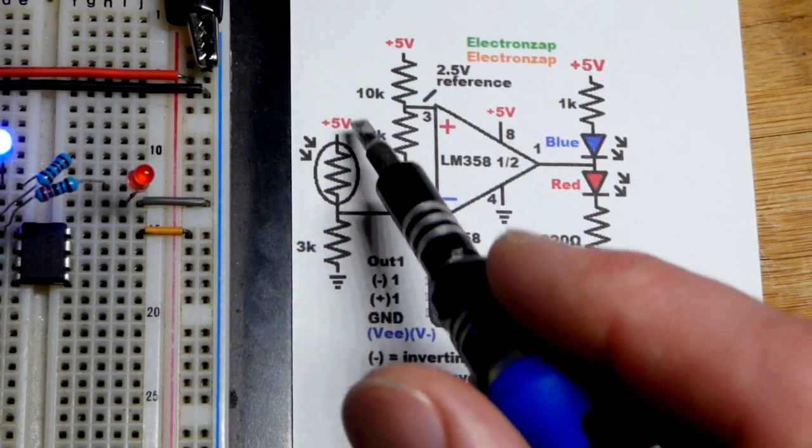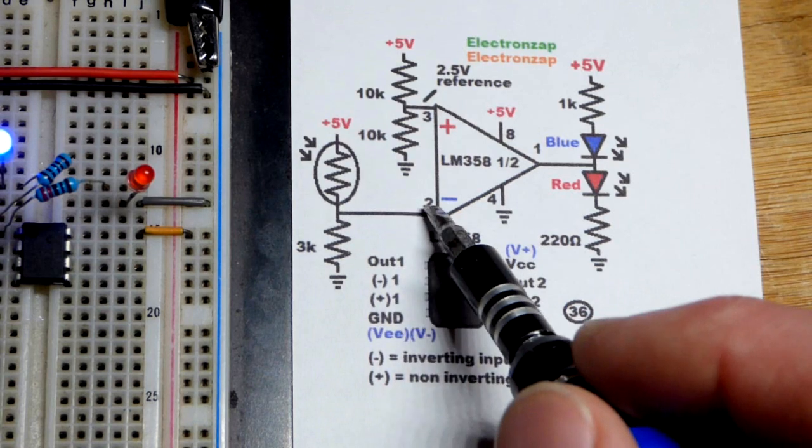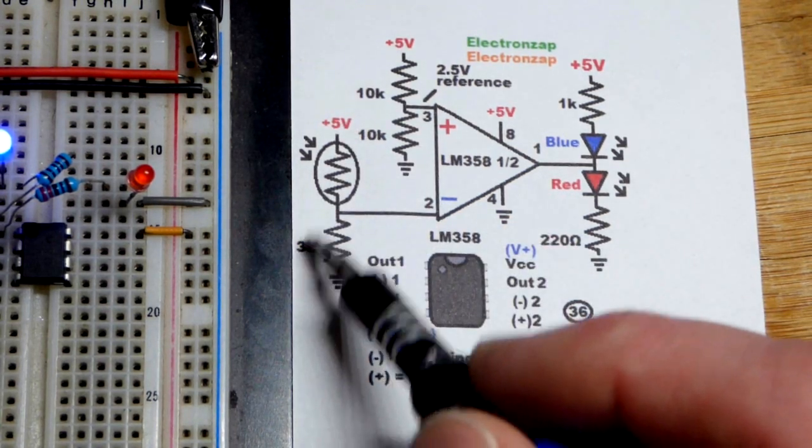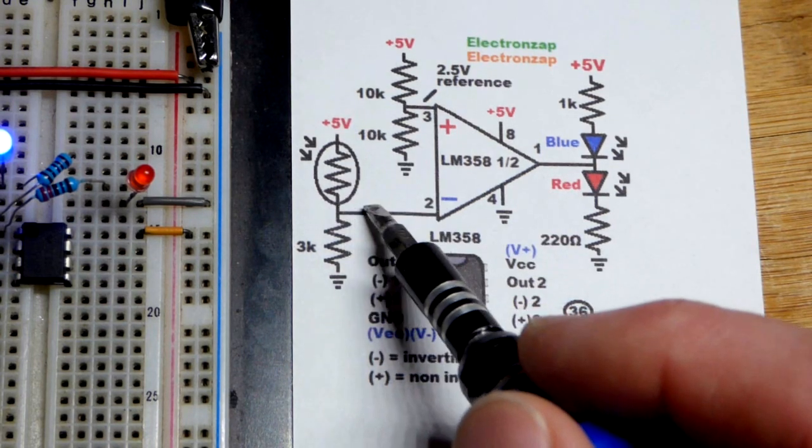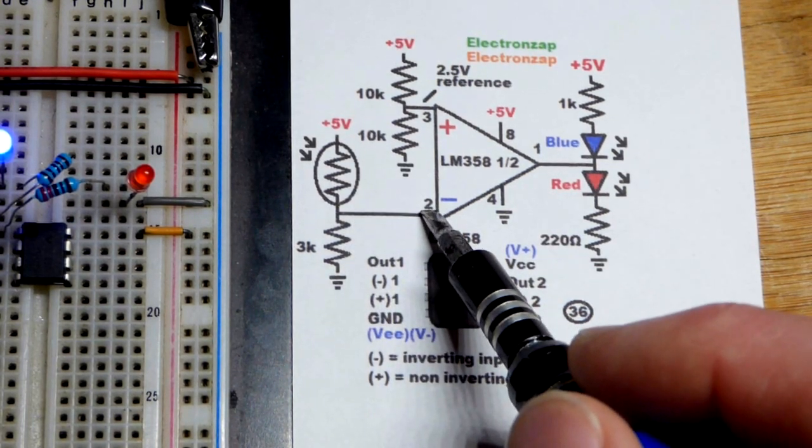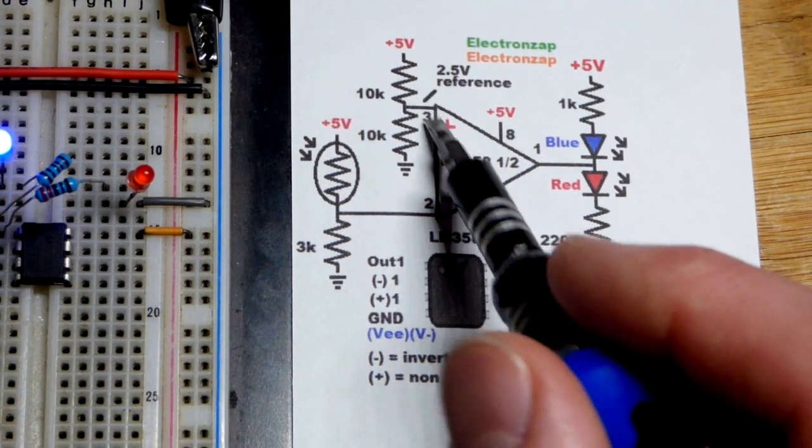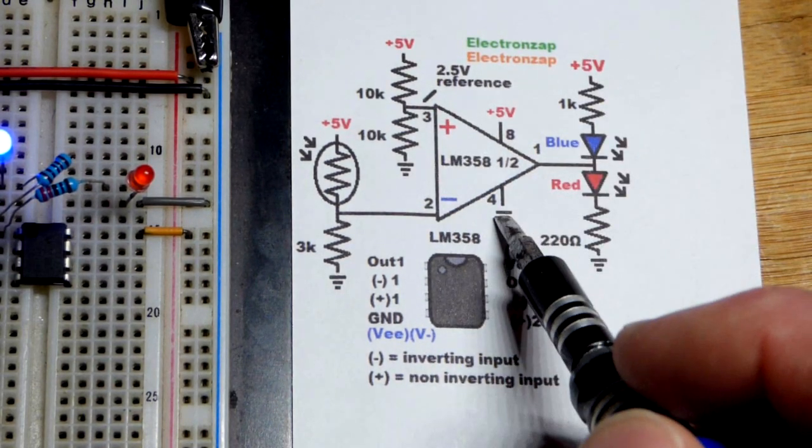and when enough light falls on the light dependent resistor, it has lower resistance. Once it's lower than 3000 ohms, it's closer to 5 volts than 0 volts. Thus we have a higher voltage than our reference, which is lower, so we have a low output.